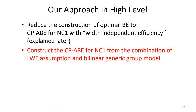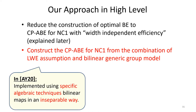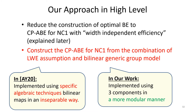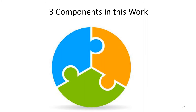Next, I am going to explain the second step, where we construct CP-ABE for NC1. In this step, we diverge from the approach of AY20. In AY20, ABE is constructed using a combination of specific algebraic techniques on bilinear maps. In our work, we implement this step using three components in a more modular manner, though it is similar to AY20 at a high level. Our approach can be seen as a refinement of that of AY20. Now I am going to explain the three components used in constructing our ABE scheme.